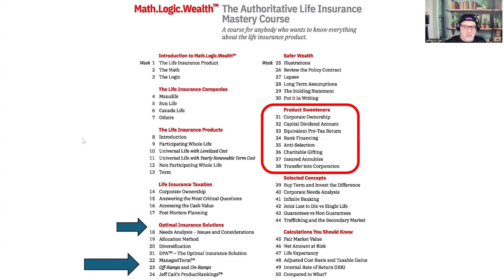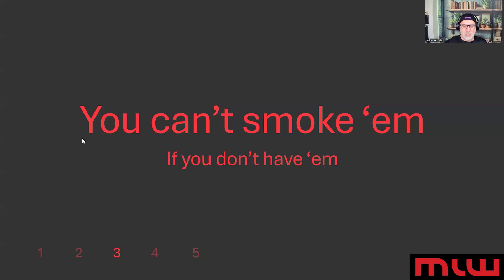Number three: product-specific ramp strategies — you need all three. Participating products excel at controlled increases and third-party bank loans. Non-PAR products lock in insurance costs today and provide guarantees that PAR doesn't have; they can be designed with cash values, increasing death benefits, or without. And then you have TERM, which offers valuable conversion on-ramps and clean termination off-ramps.